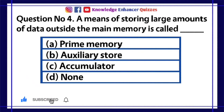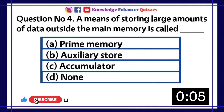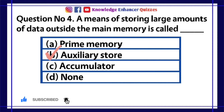Question number 4. A means of storing large amounts of data outside the main memory is called dash. A. Prime memory. B. Auxiliary store. C. Accumulator. D. None. Option B is the right answer.